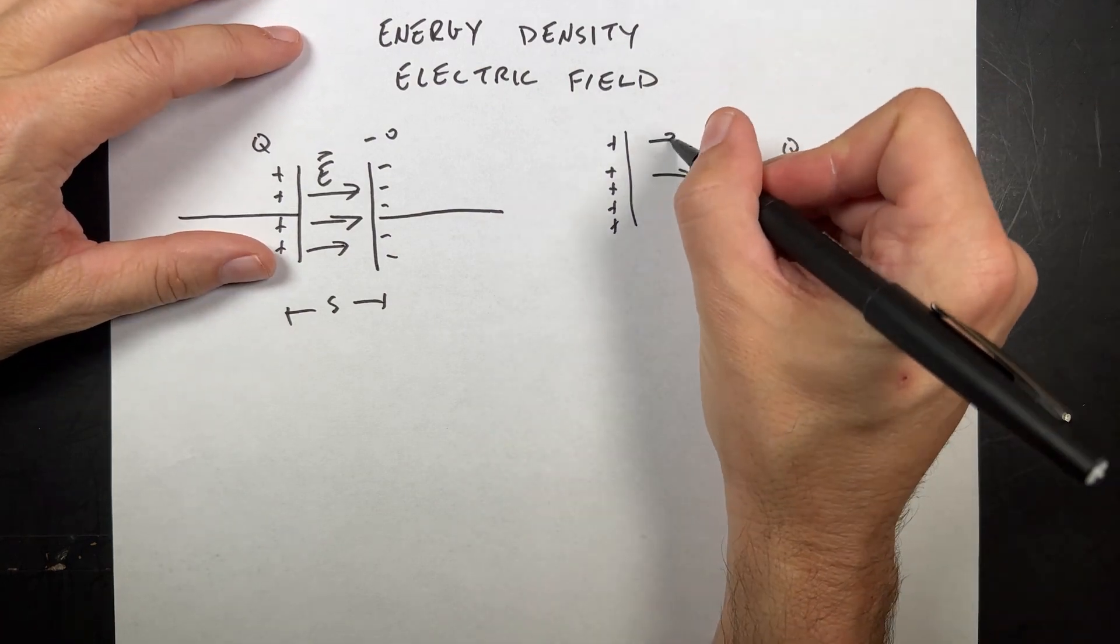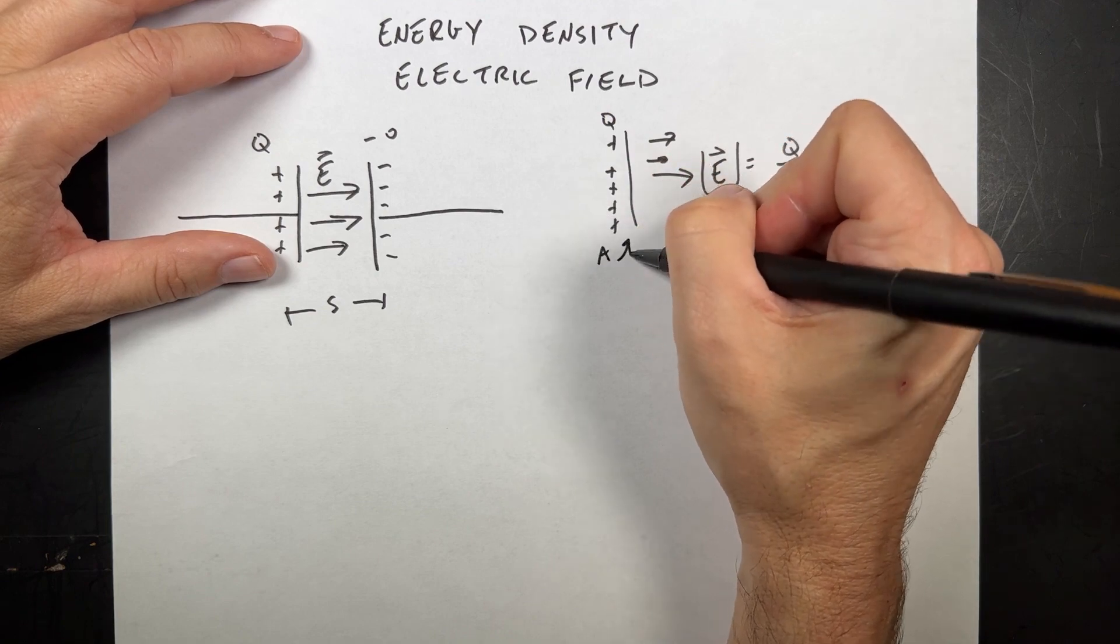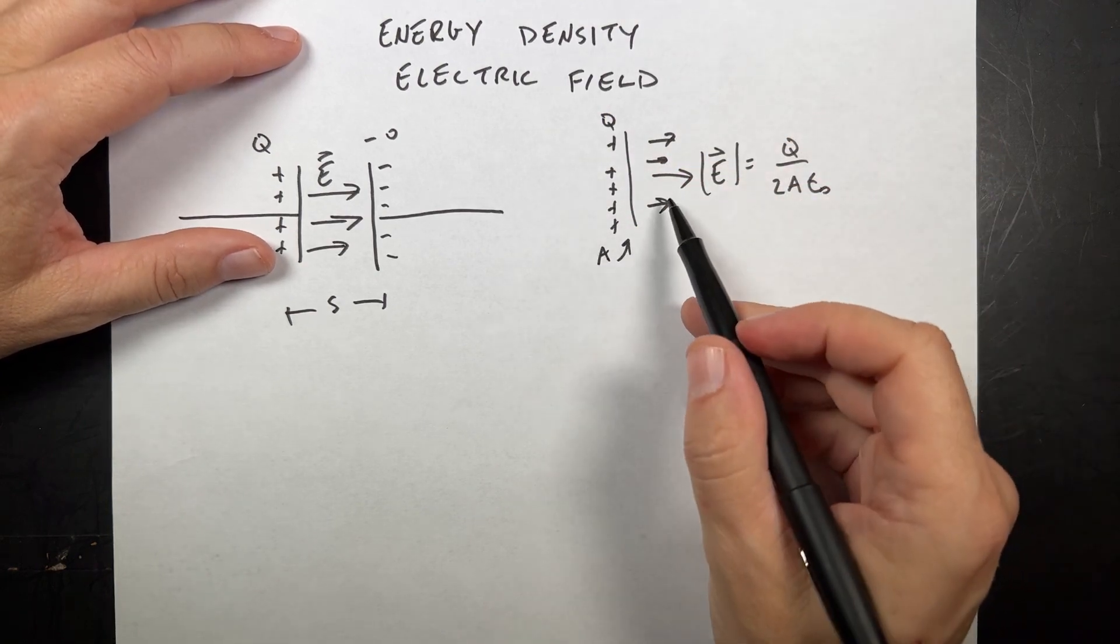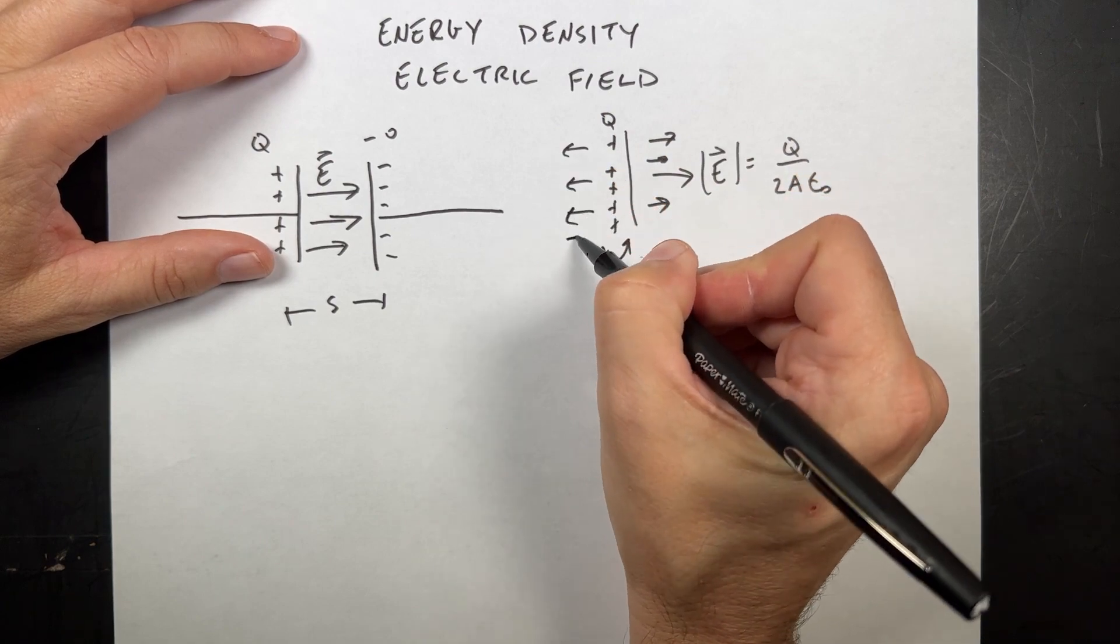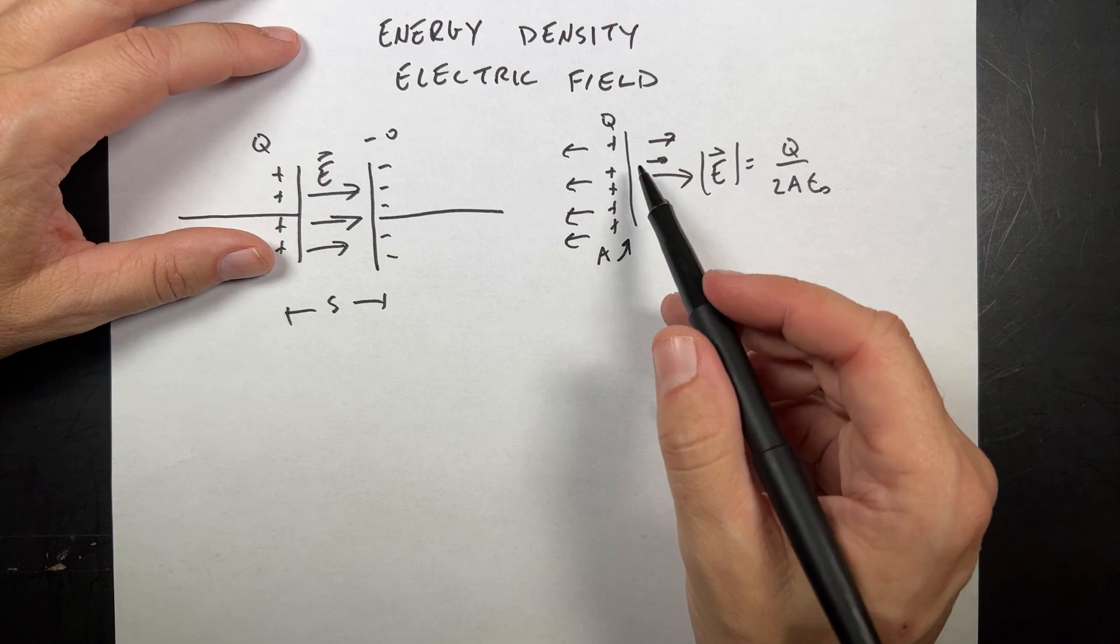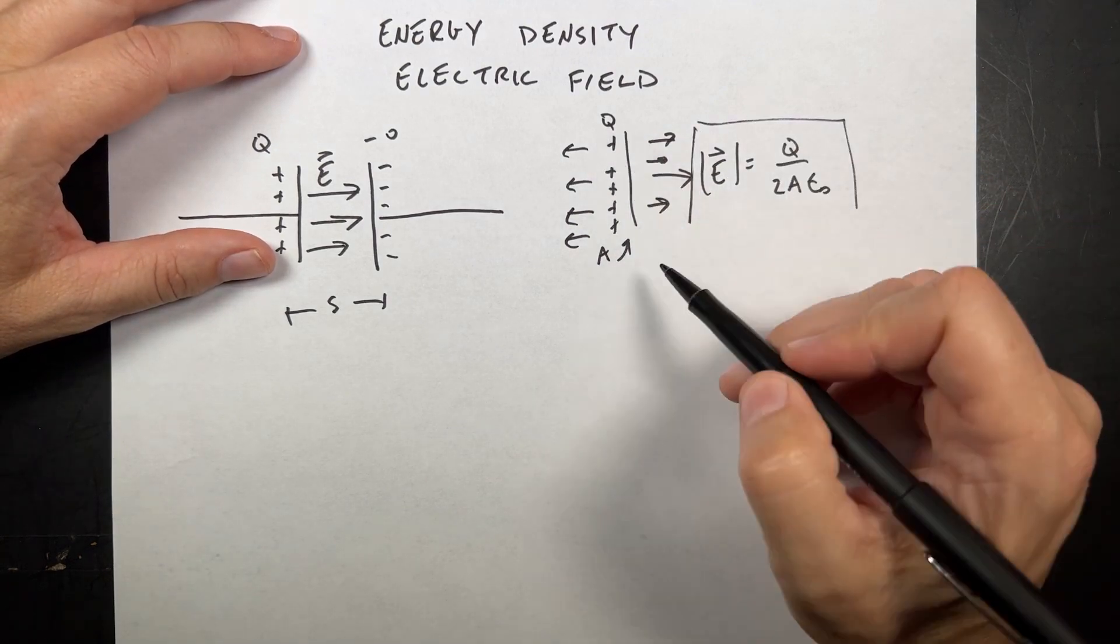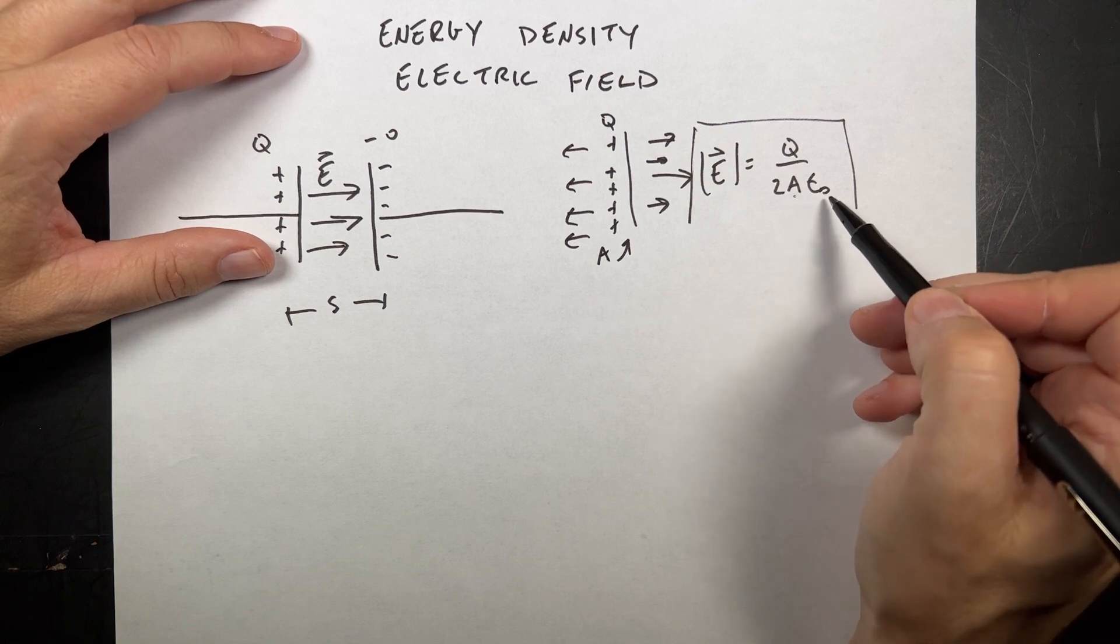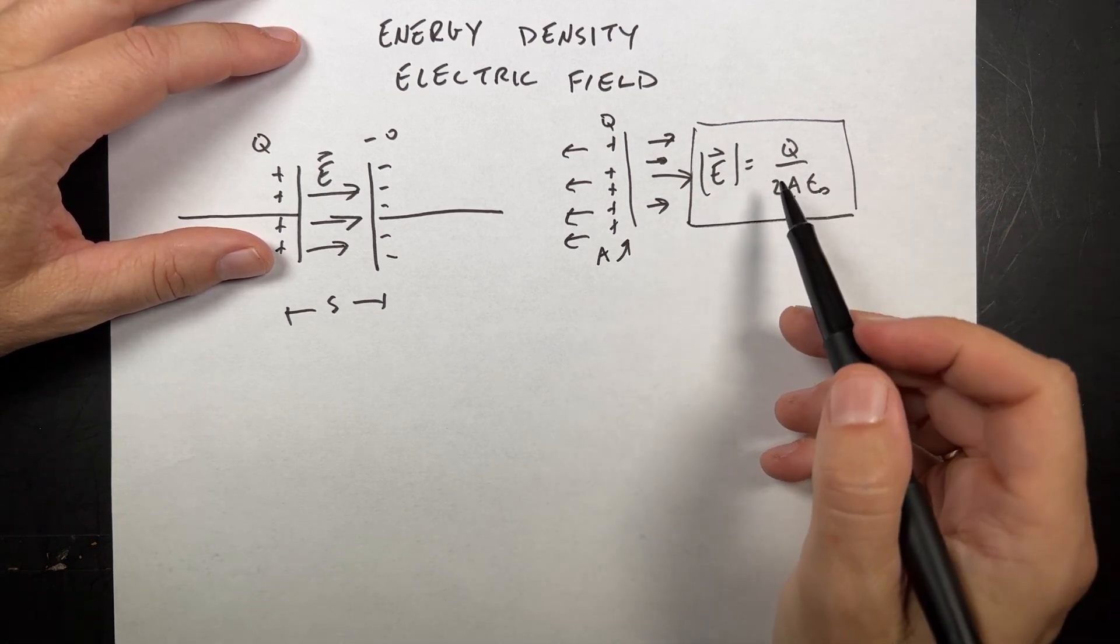If you have a parallel plate with charge Q on there and an area A, then the electric field points away from the plate. If you're very close to the plate, it's a constant magnitude and it doesn't change with distance. It has the expression, the magnitude Q, total charge, over 2A epsilon naught, where epsilon naught is a constant. That's the electric field due to a plate.